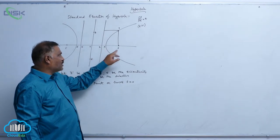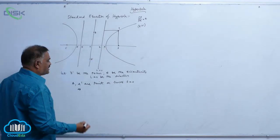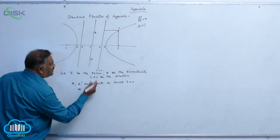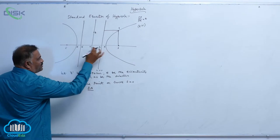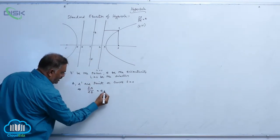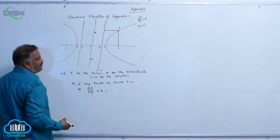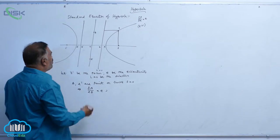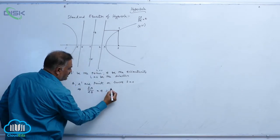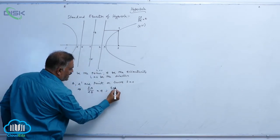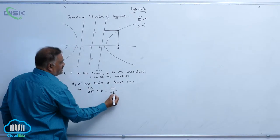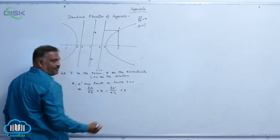The distance from A to the focus — SA divided by AZ — equals E. And similarly, SA dash divided by A dash Z equals E.